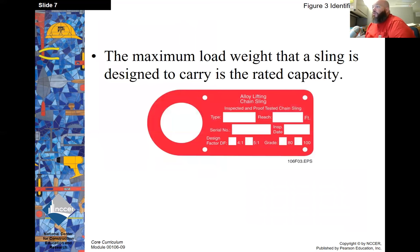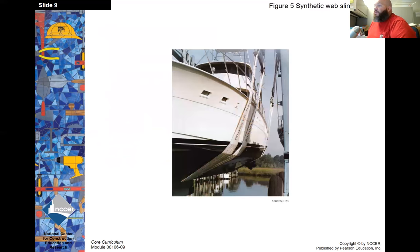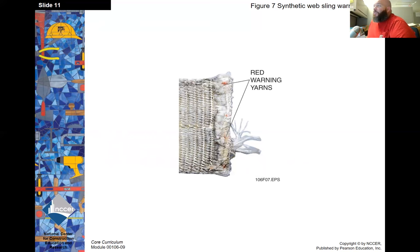The maximum load weight that a sling is designed to carry is the rated capacity, listed on the identification tag. Looking at this sling, we notice these red warning yarns. When the sling begins to be damaged, you'll be able to see these yarns fraying from a cut, telling you that the sling is damaged and unsafe to use.